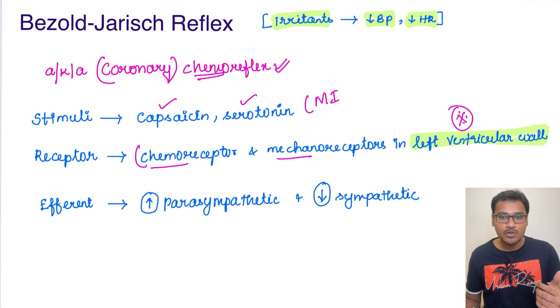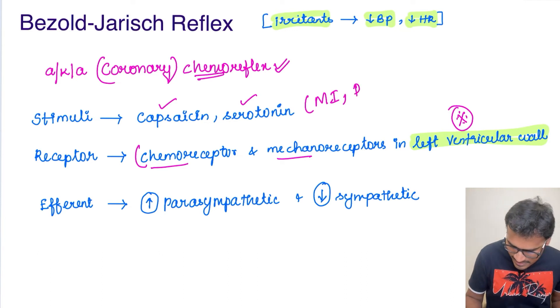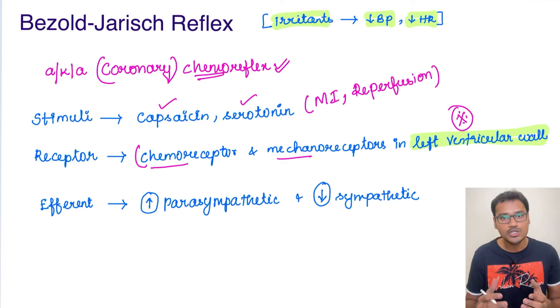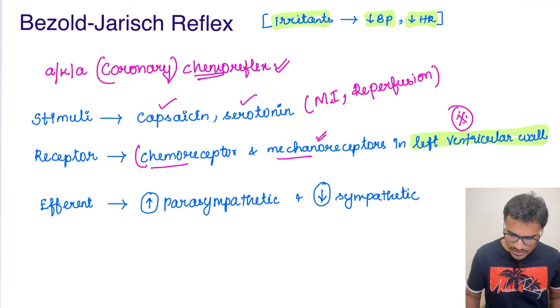And one more reason is whenever there is reperfusion. When reperfusion is done, this reperfusion will lead to a lot of generation of free radicals, and these free radicals also can activate the mechanoreceptors and chemical receptors in the left ventricular wall.